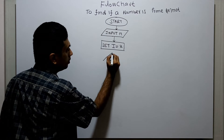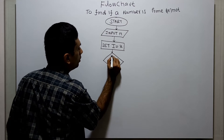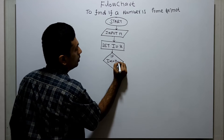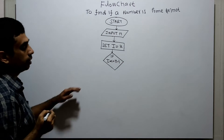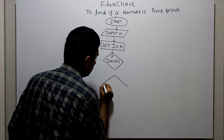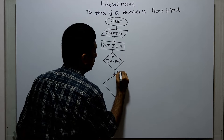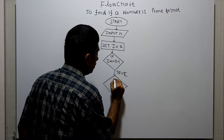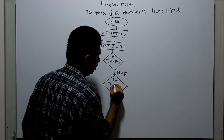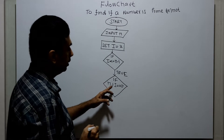Next I am checking the condition: i less than or equal to n minus one. If the condition is true, I check a further condition: n modulo i equal to zero. That means when I divide n by i, the remainder is zero.